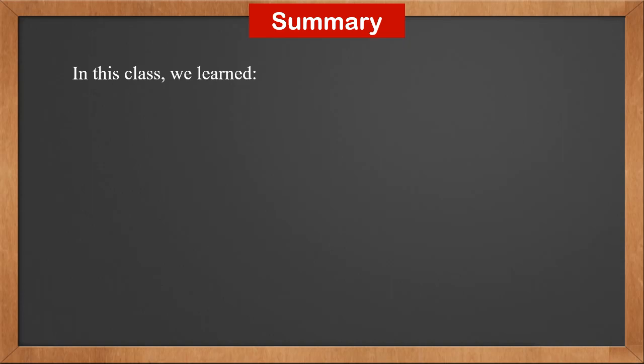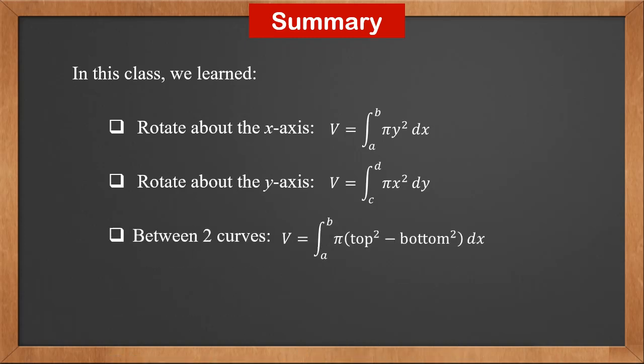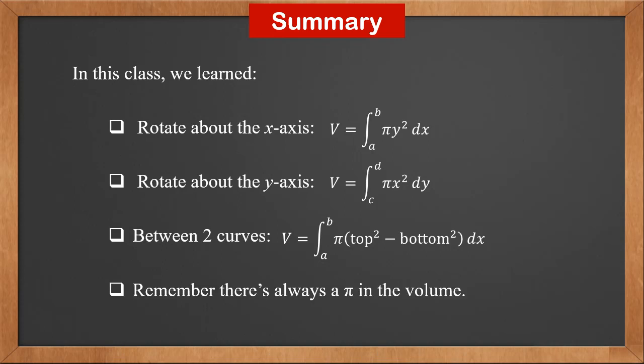In this class, we learned: when a curve is rotated about the x-axis, the volume of revolution is the integral of pi y squared dx from a to b. When a curve is rotated about the y-axis, the volume of revolution is the integral of pi x squared dy from c to d. When the part between two curves is rotated about the x-axis, the volume is the integral of pi times (top squared minus bottom squared) dx. Remember, there's always a pi in the volume.